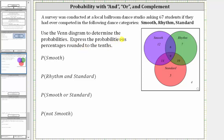Because we want the probabilities as percents to the tenths, we'll have to first get the probabilities as a decimal to the thousandths, or three decimal places. Looking at the Venn diagram, notice how the number of students in each set are indicated by the numbers in the Venn diagram. If we added up all these numbers, including these four students here, the sum would be 67 students.